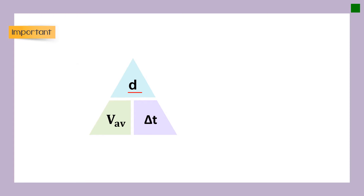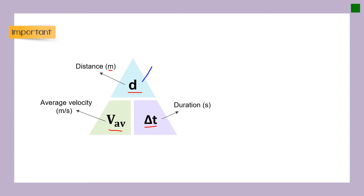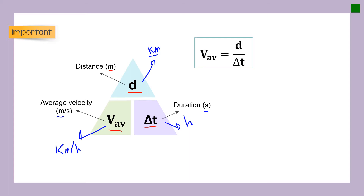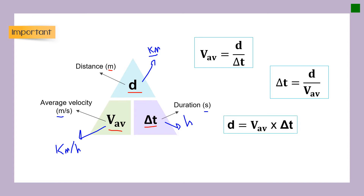The SI unit of velocity is meters per second, and this is how we convert between the two units of velocity: kilometer per hour and meters per second. The most important rule in this chapter is the infamous triangle. We have distance (SI unit: meters), average velocity (SI unit: meters per second), and duration (SI unit: seconds). From this triangle we get three formulas: average velocity equals distance over duration; duration equals distance over average velocity; and distance equals average velocity times duration.